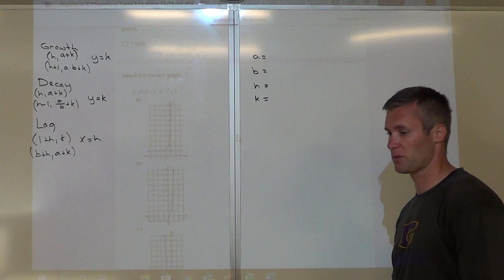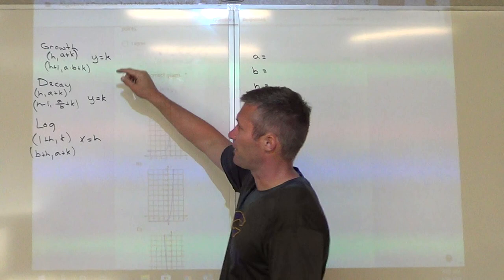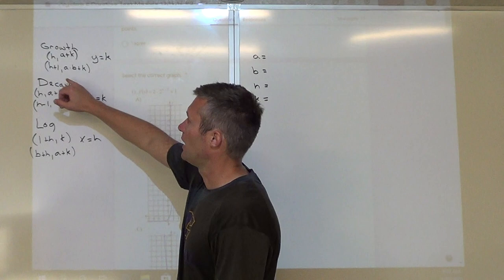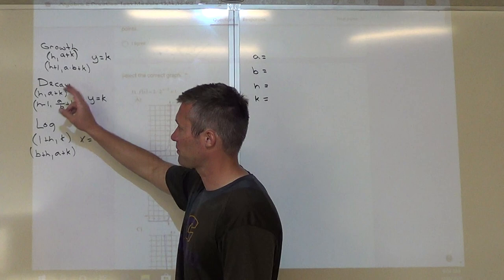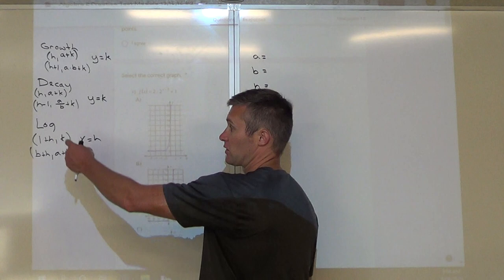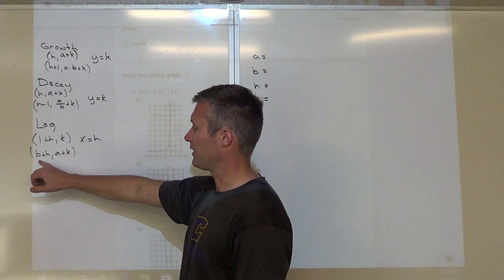When we're graphing 1, 2, 3, 4, we're going to look and say: is it growth, is it decay, or is it log? If it's growth, we use H and then A plus K to get my first point, and then H plus 1, then A times B plus K for my second point. If it's decay, same thing: H and A plus K for the first point. For the second point, it's H minus 1 and A divided by B plus K. For both, the horizontal asymptote is at Y equals K. If it's log, we use reference point 1 plus H and K, then B plus H and A plus K.